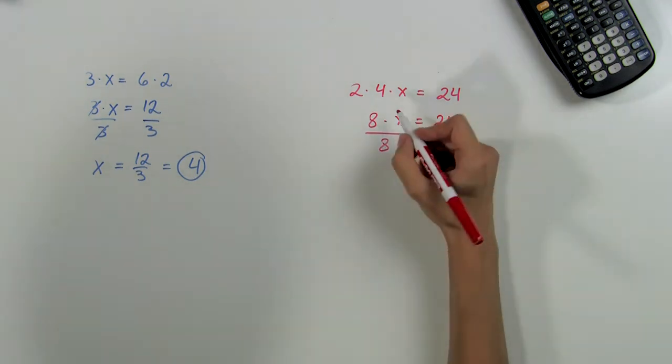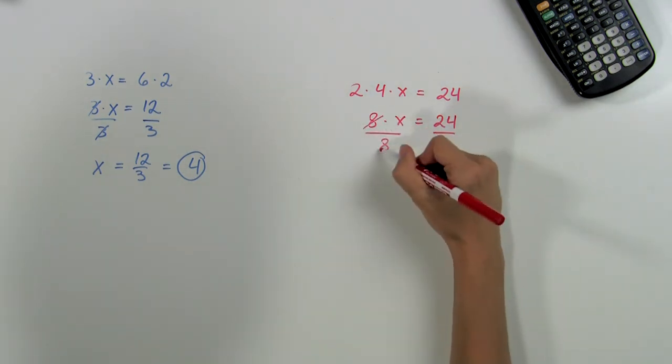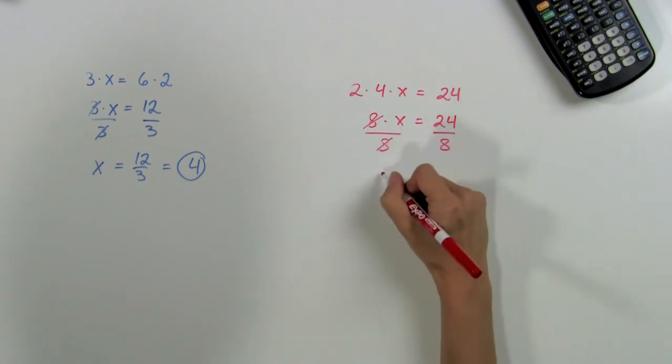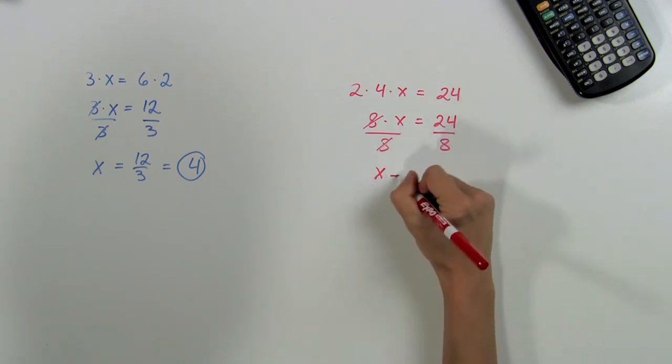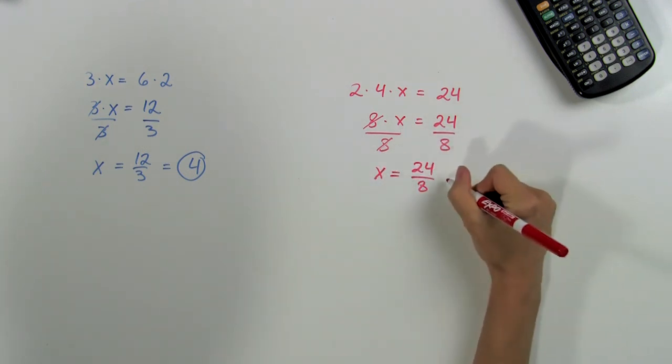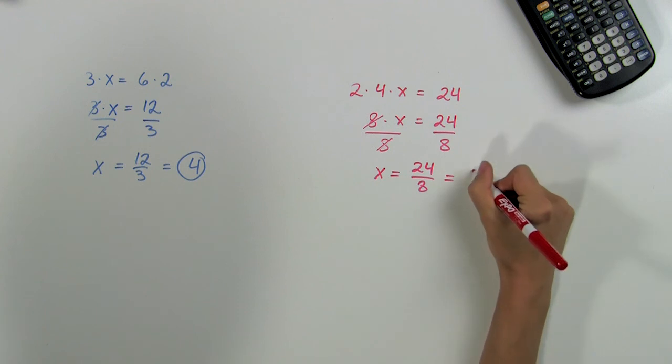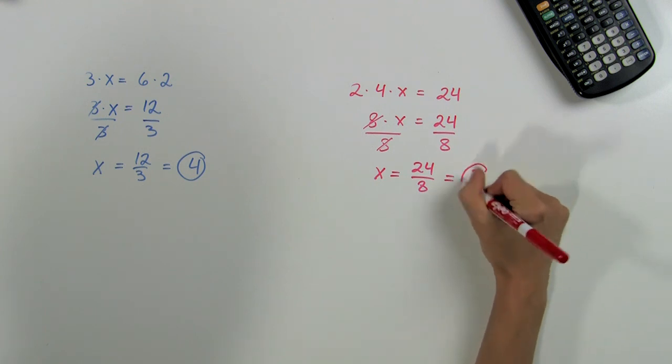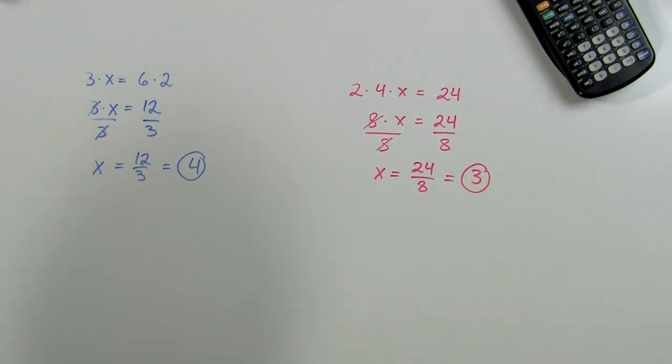The 8's cancel out, and we are left with x is equal to 24 divided by 8, which is equal to 3. And that's how we solve multiplication equations using integers. My name is Eugenia, and thanks for watching!